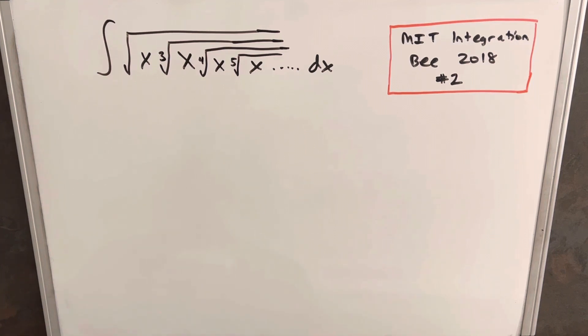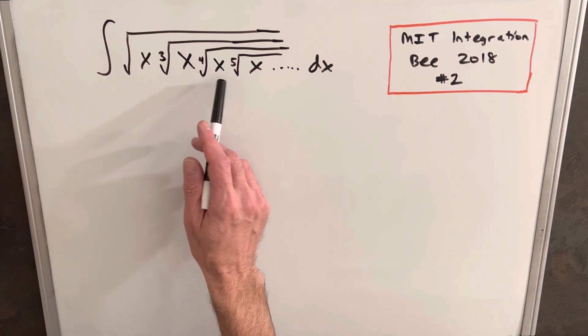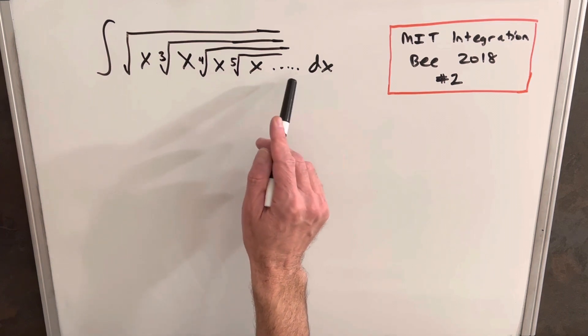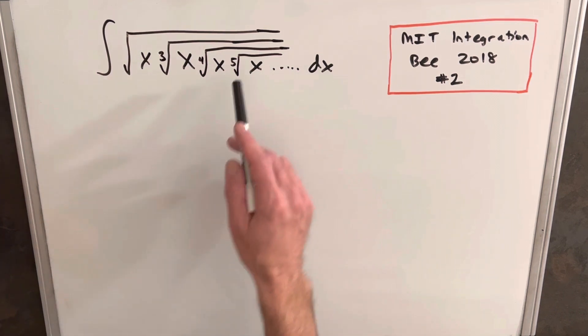So we have the integral of this embedded radical situation: square root of x, cube root of x, fourth root of x, fifth root of x, dot dot dot. This is going to continue infinitely.